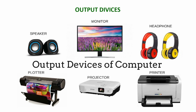Output devices are those devices that give us results from our computer. Examples include the monitor, which is the main output device you use to see what you are doing on the computer, speakers which produce sound, headphones which you listen to through your ears, and plotters, projectors, and printers. All these are examples of output devices.